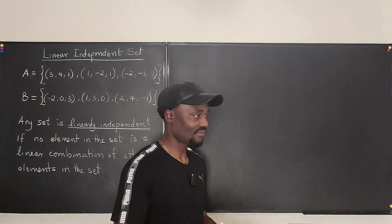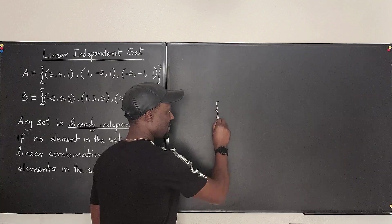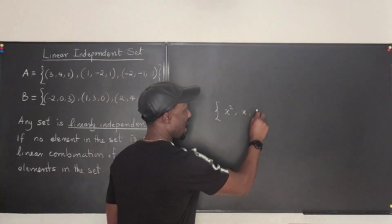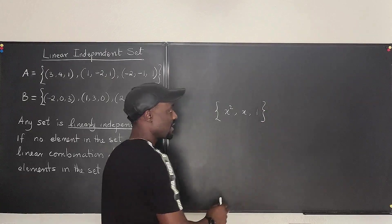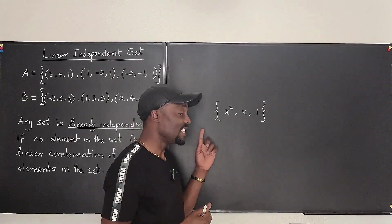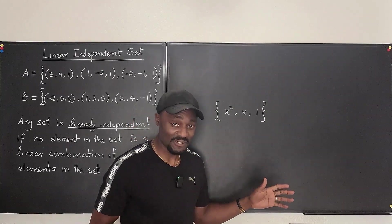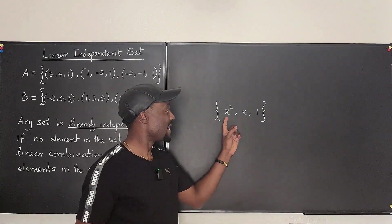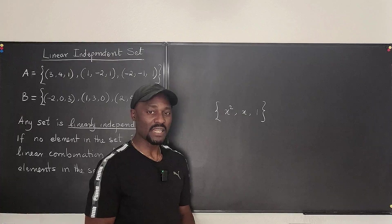Look at this. If I give you this set, the set of x squared, x, and one, I know this set is a linearly independent set because it is impossible to get rid of this one by just manipulating x squared and x.